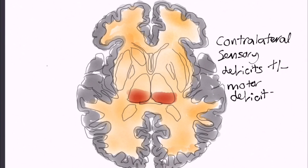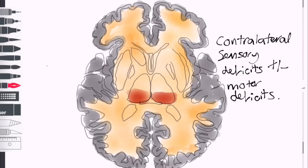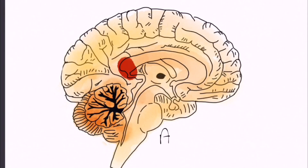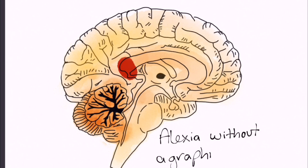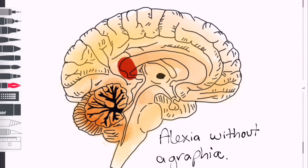Motor symptoms are less common. If the splenium of the corpus callosum is involved, the patient may present with alexia without agraphia, which means patients can write but cannot read. This represents a deficit in communication between the two occipital lobes.